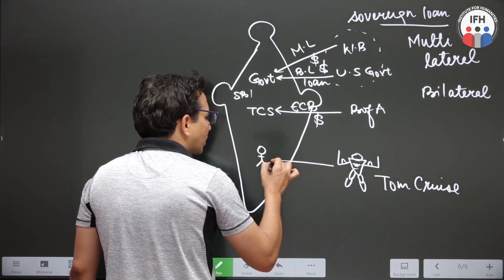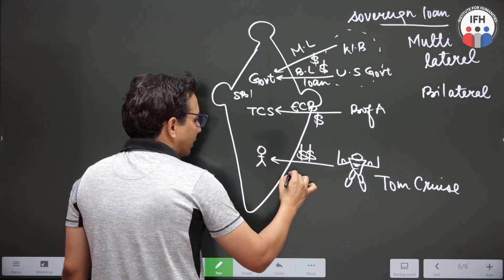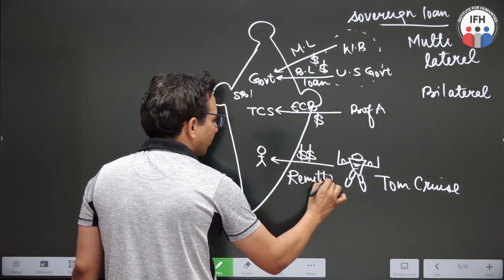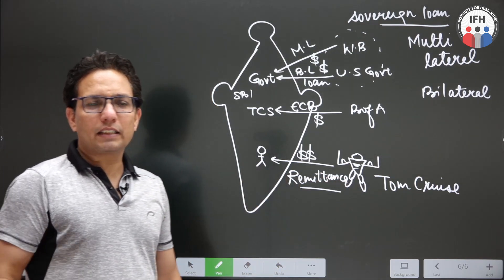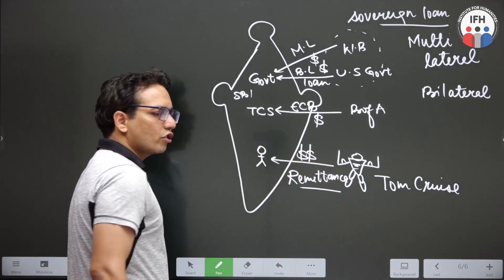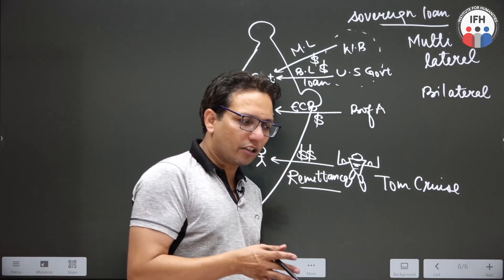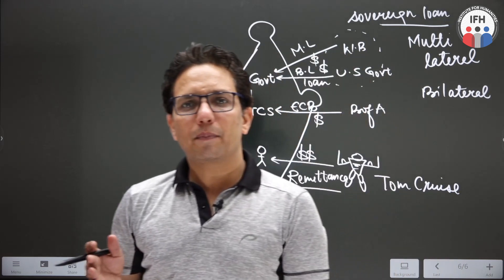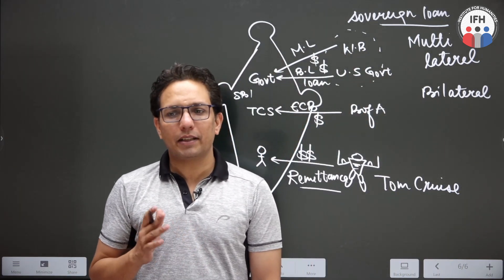Similarly, if Tom Cruise sends me some money — basically called remittance — again in foreign currency, it is also part of balance of payment. So balance of payment is a record of all financial transactions made between residents of a country and non-residents in a period of one year. This record for any country is maintained by the central bank.